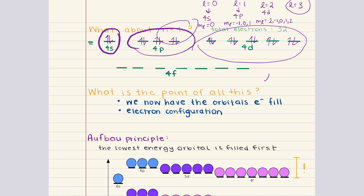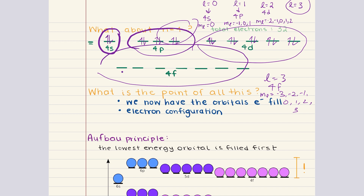Finally, when l is equal to three, we have our 4f subshell. Here our ml values can be negative three, negative two, negative one, zero, one, two, and three — that's seven values of ml — which means our 4f subshell has seven orbitals. Each orbital can house two electrons with opposite spins. For our fourth shell, we recognize that it can hold up to a maximum of 32 electrons.